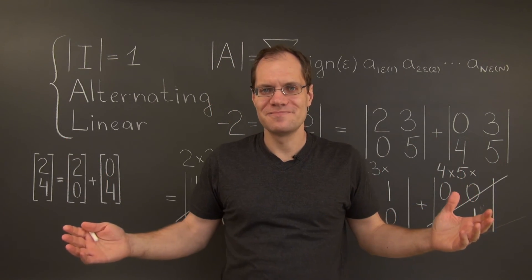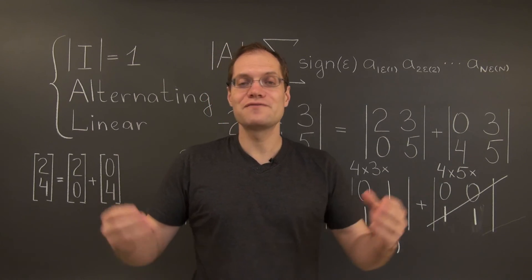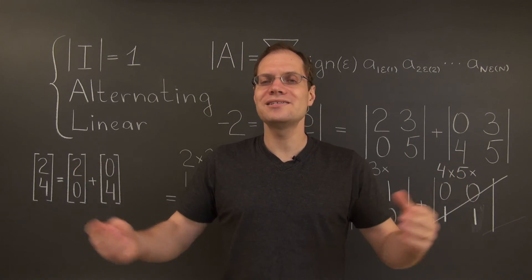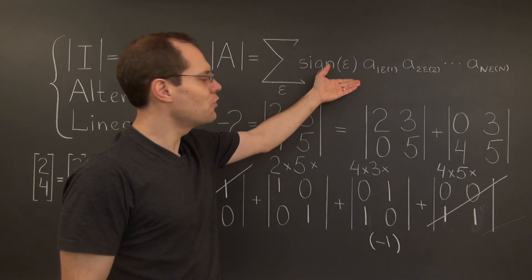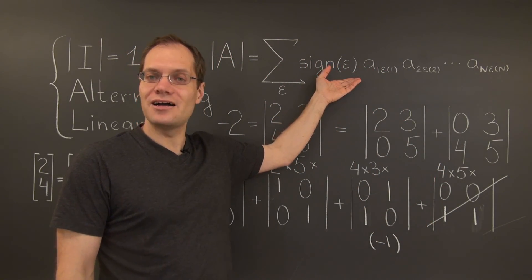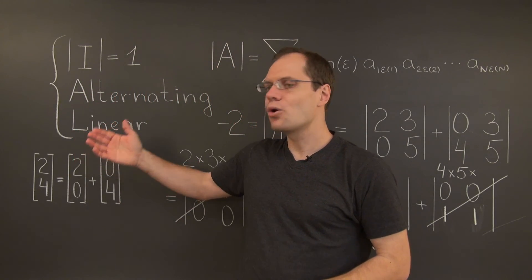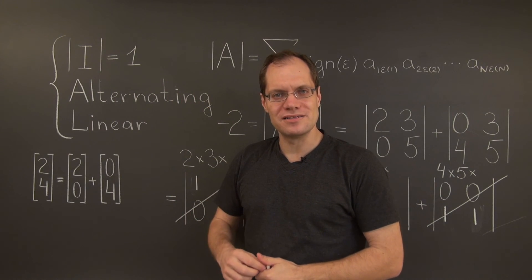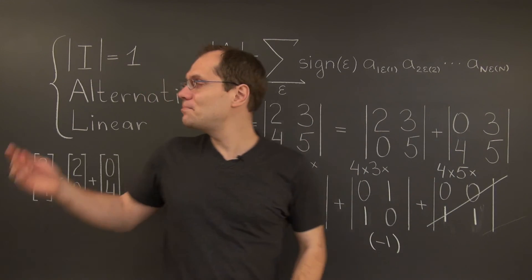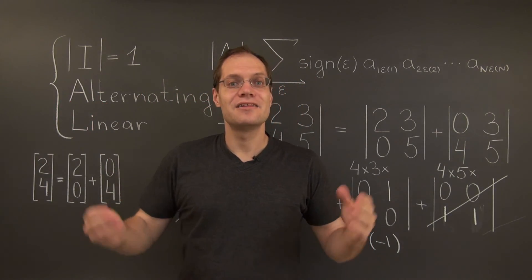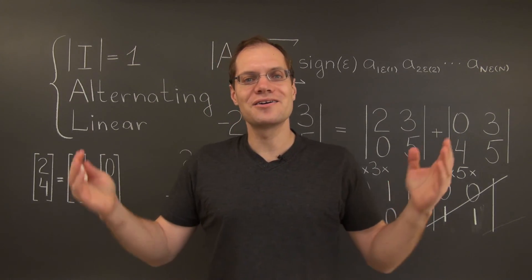In conclusion, if you ever decide to write a book on determinants, you have two options for introducing determinants: you can do it as we did it by postulating the algebraic formula and then deriving these properties, or by postulating these properties and then deriving this formula on the basis of these properties. The two approaches are equivalent.